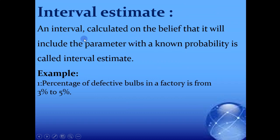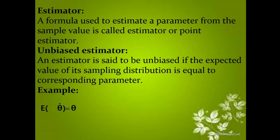An Interval Estimate is an interval calculated on the belief that it will include the parameter with a certain probability. For example, the percentage of defective bulbs in a factory is from 3% to 5%. That range of values is the interval estimate.